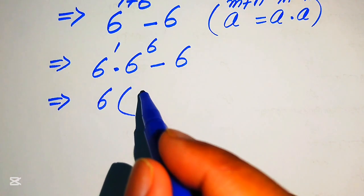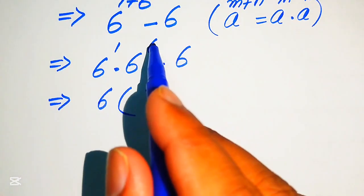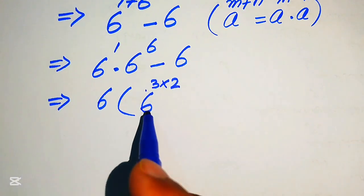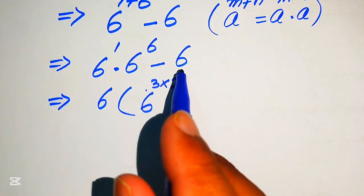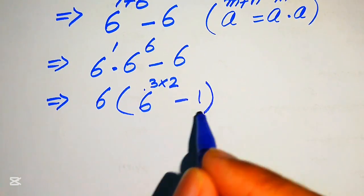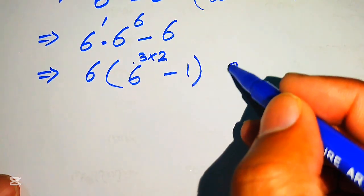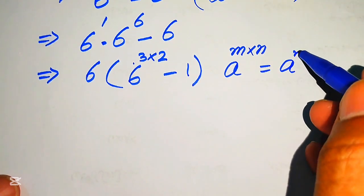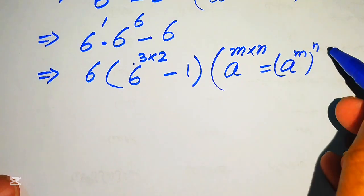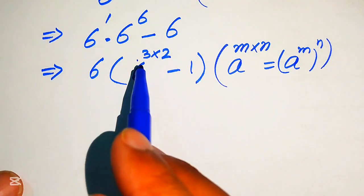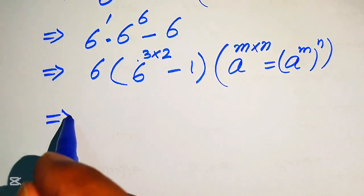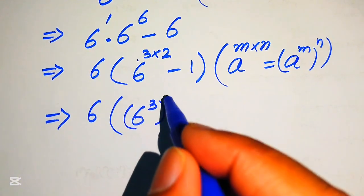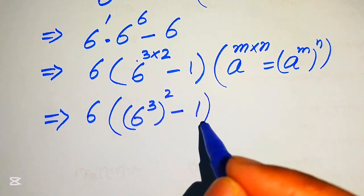Now we take 6 to the power of 6 as a common factor. We can also break 6 as 6 to the power of 3 multiplied by 2, since 3 twos are 6. When we take out the common factor, we are left with (6 times 1) minus 1 inside. We then apply the exponent law: a to the power of m times n equals (a to the power of m) to the power of n, moving the 3 inside to get 6 times (6 cubed) squared, minus 1.